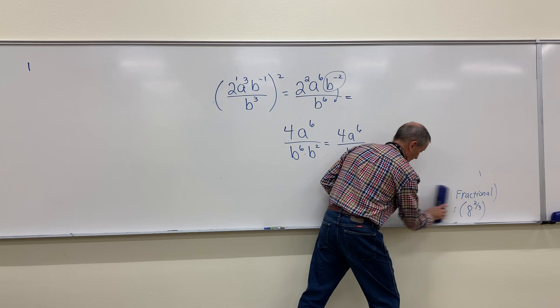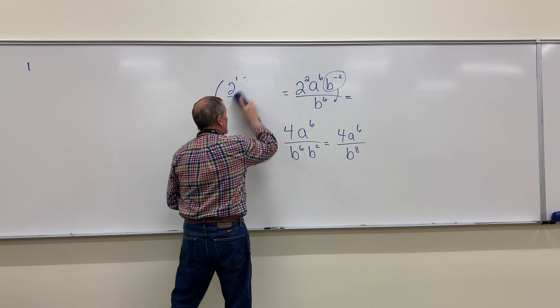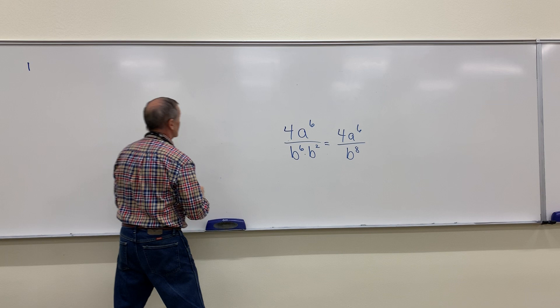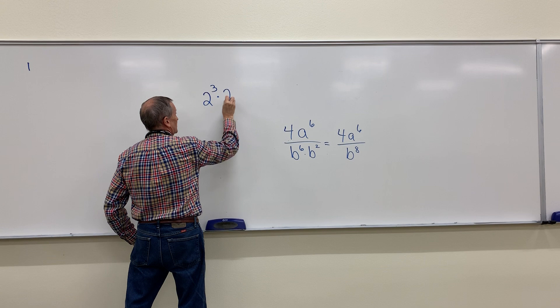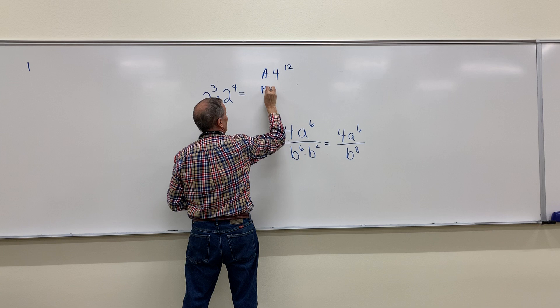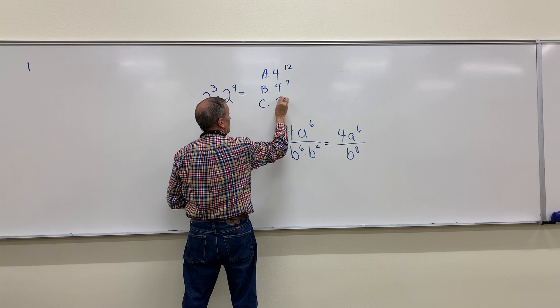Hey, you want a sneaky, multiple-choice question? See if you've paid attention on the properties of exponents. What's this? Here's your options. A: 4^12, B: 2^4, C: 2^7, D: 4^7.